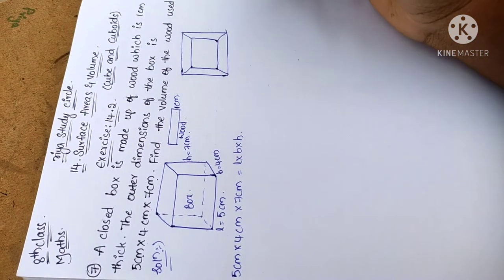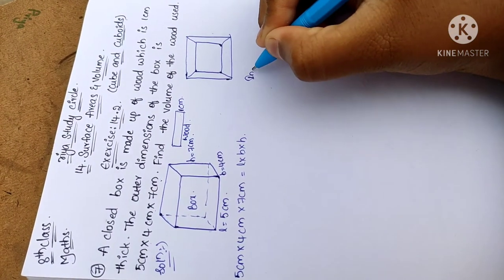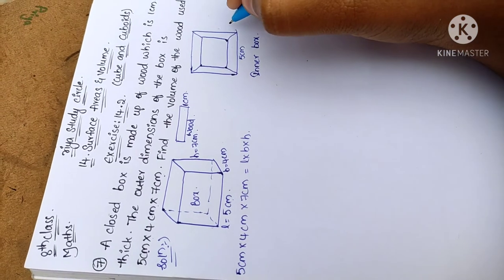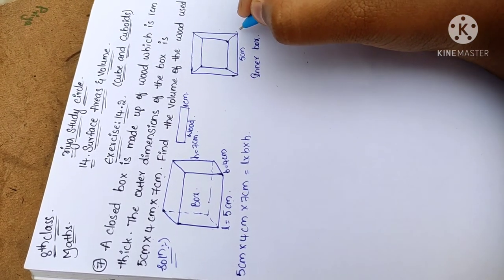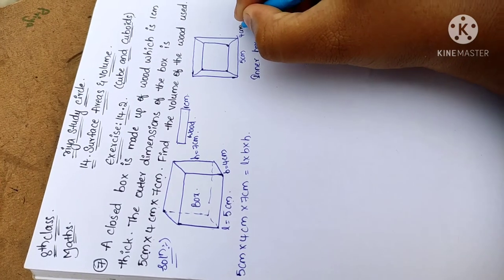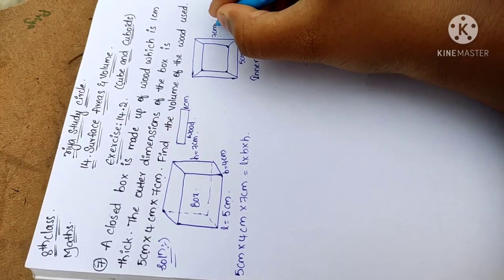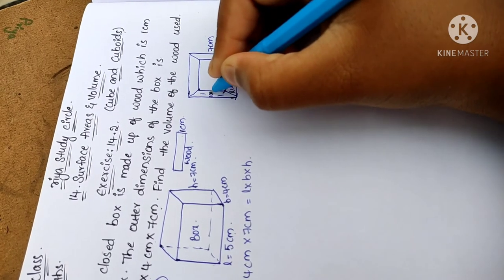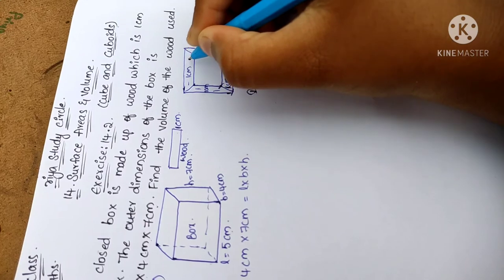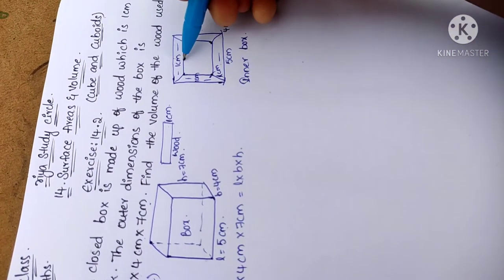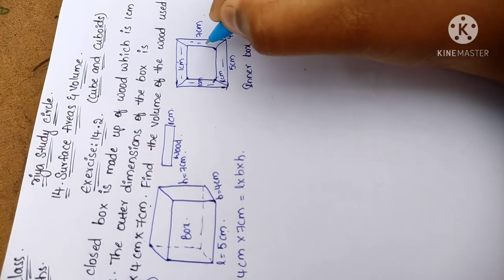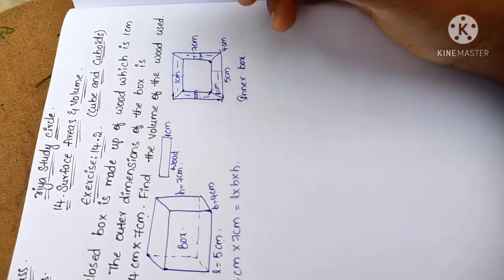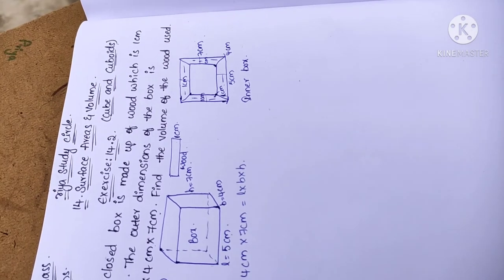Now we take the inner part of the wooden box. The outer dimensions are length = 5 cm, breadth = 4 cm, height = 7 cm. The thickness of the wood is 1 cm on each side. When we calculate the inner part of the box, we have to subtract all those thicknesses.